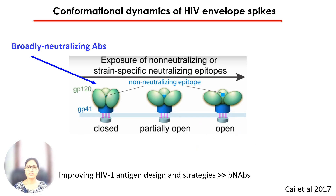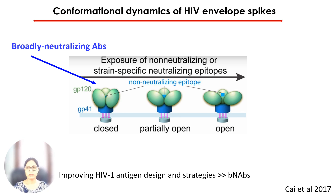In addition to junk envelope forms, the conformational dynamics of the envelope can also affect the immune response. The envelope is not a static molecule — it constantly breathes. It can exist in a closed state where non-neutralizing epitopes are hidden or masked, or in open and partially open states which expose some of these epitopes. It is the closed conformation that is targeted by broadly neutralizing antibodies — the kind of antibodies that any effective vaccine must elicit.